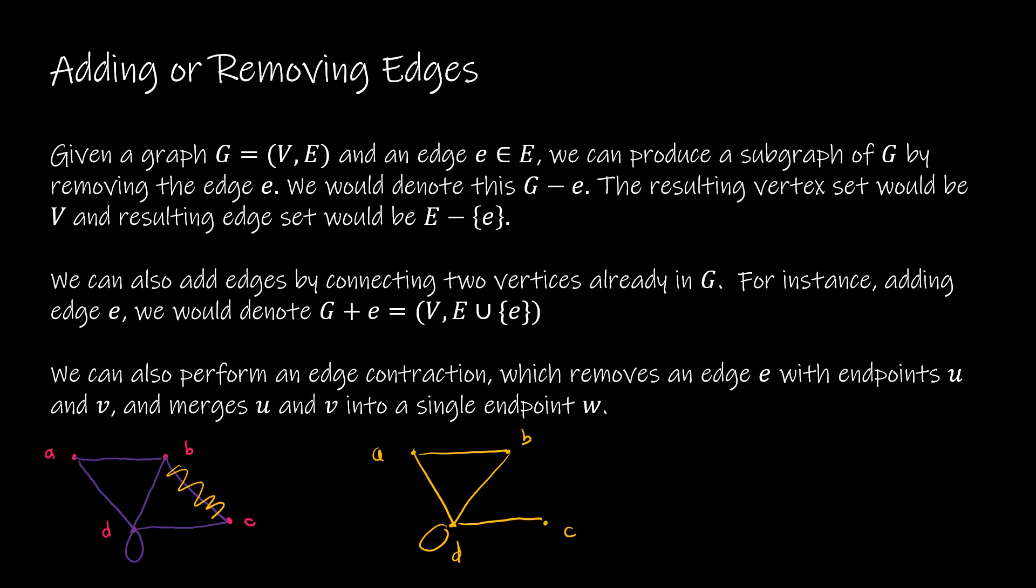You can also choose to add an edge, and again, I want to point out to you the notation. So here, the edge set would be E, which is the edge set, minus the edge that I'm getting rid of, that I'm choosing to get rid of. If I'm adding an edge, I would still have the same vertex set, but the new edge set would be the original edge set with the union of the edge that I'm adding.